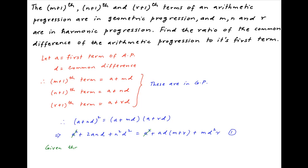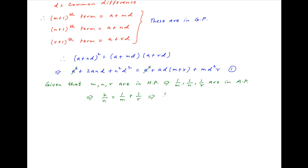Now, we are also given that m, n, and r are in harmonic progression, which means that 1/m, 1/n, and 1/r are in arithmetic progression, which implies that 2/n is equal to 1/m plus 1/r. In other words, 1/r equals 2/n minus 1/m, which equals (2m minus n) upon mn. Therefore, r equals mn divided by (2m minus n). Let's call this Result 2.